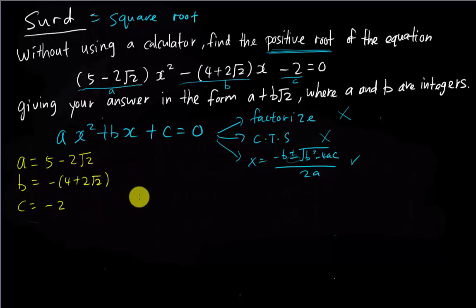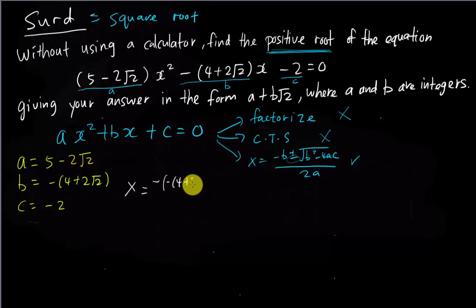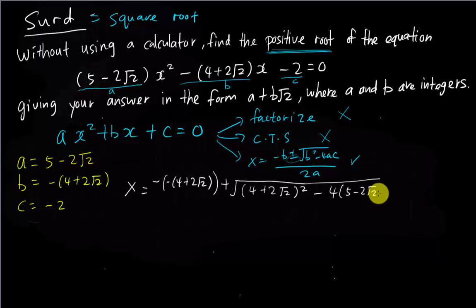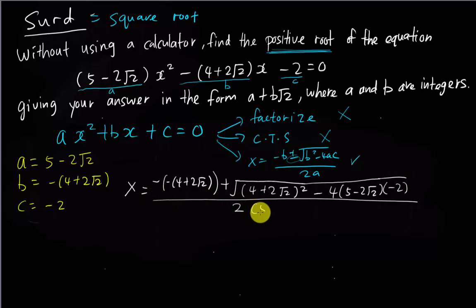Now I write down the formula. x = −b, and since my b is negative, negative times negative gives positive, so I write −(−(4 + 2√2)), plus the square root of b² − 4 × (5 − 2√2) × (−2), all divided by 2 × (5 − 2√2), which gives 10 − 4√2.